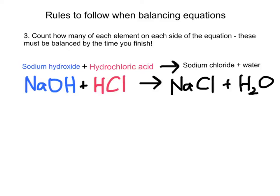The next part of the rule is that you go through and count how many of each element is on each side of the equation. By the time you finish balancing, there must be the same number of elements on both sides — that's the whole idea of balancing. It is not possible to create molecules out of nothing, nor can we lose molecules into nothing, so they must be even on both sides.